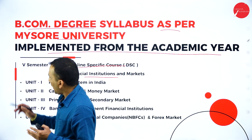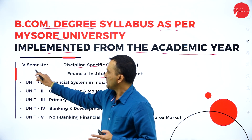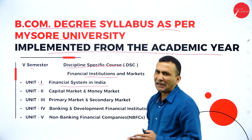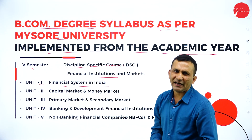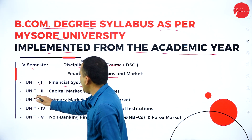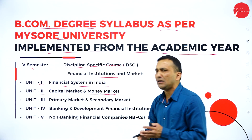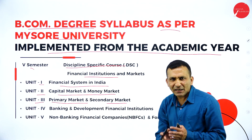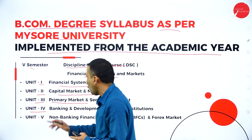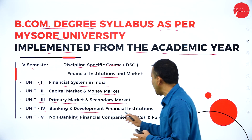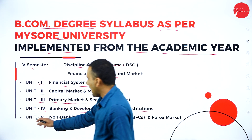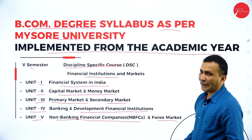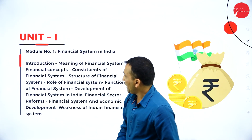This is a major discipline-specific course (DSC): Financial Institution and Market. Under this subject, in the fifth semester, you are going to study five units: Unit 1 — Financial System in India; Unit 2 — Capital Market and Money Market; Unit 3 — Primary Market and Secondary Market; Unit 4 — Banking and Development Financial Institutions; and Unit 5 — Non-Banking Financial Companies and Forex Market.